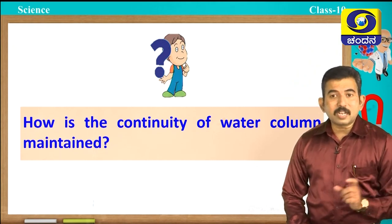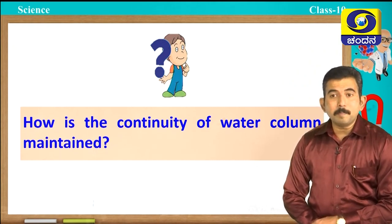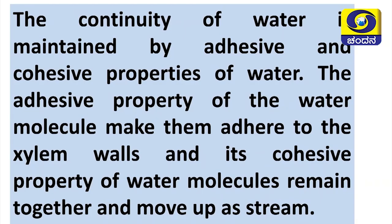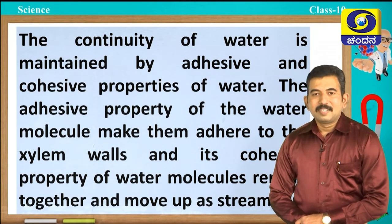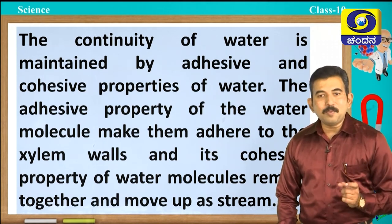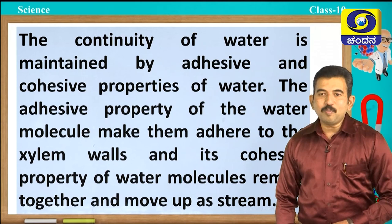How is the continuity of water column maintained in plants? The continuity of water is maintained by the adhesive and cohesive properties of water. The adhesive property of water molecules makes them adhere to the xylem walls, and the cohesive property keeps water molecules together so they move up as a stream.